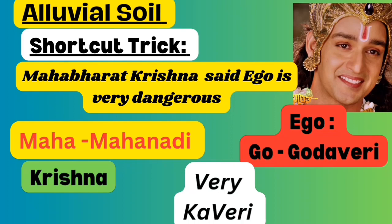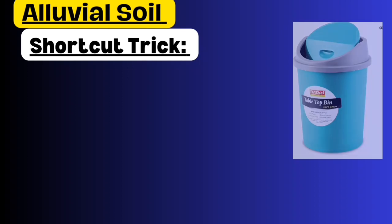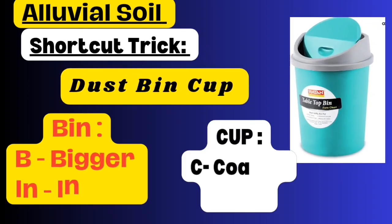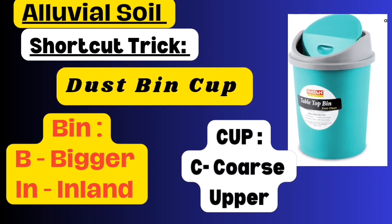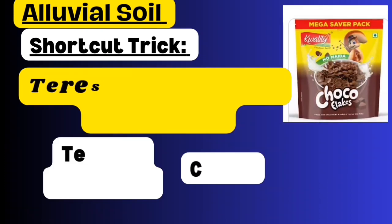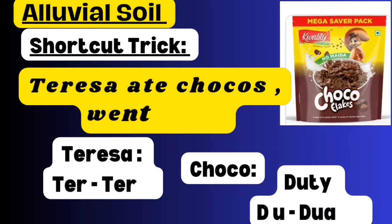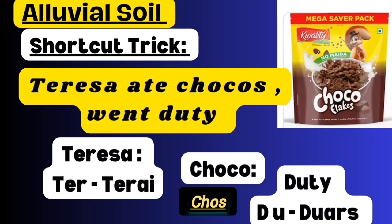Next point: alluvial soil looks bigger in size towards inland. Then take CUP - C stands for coarse, UP stands for upper reaches of the valley. So the soil particles in the upper reaches of the valley are coarse.